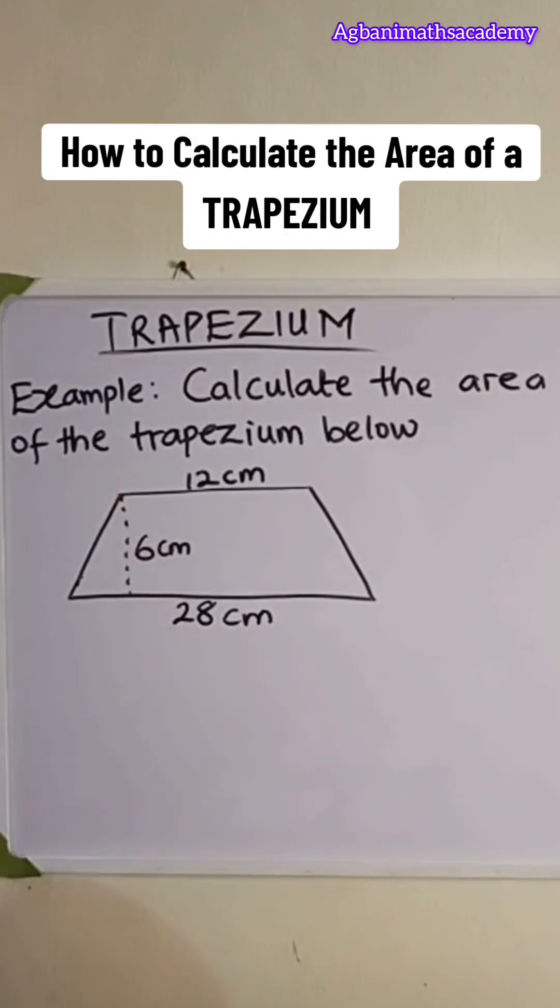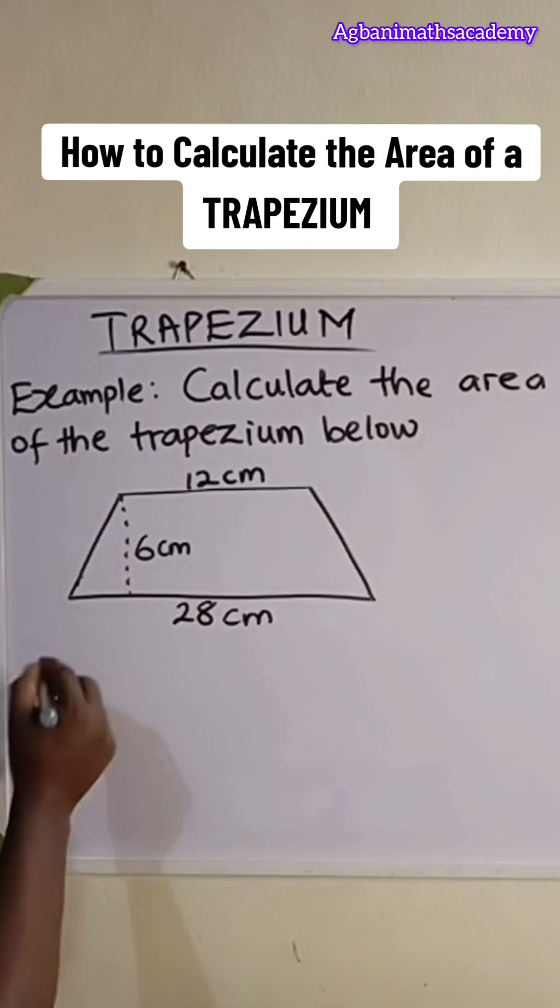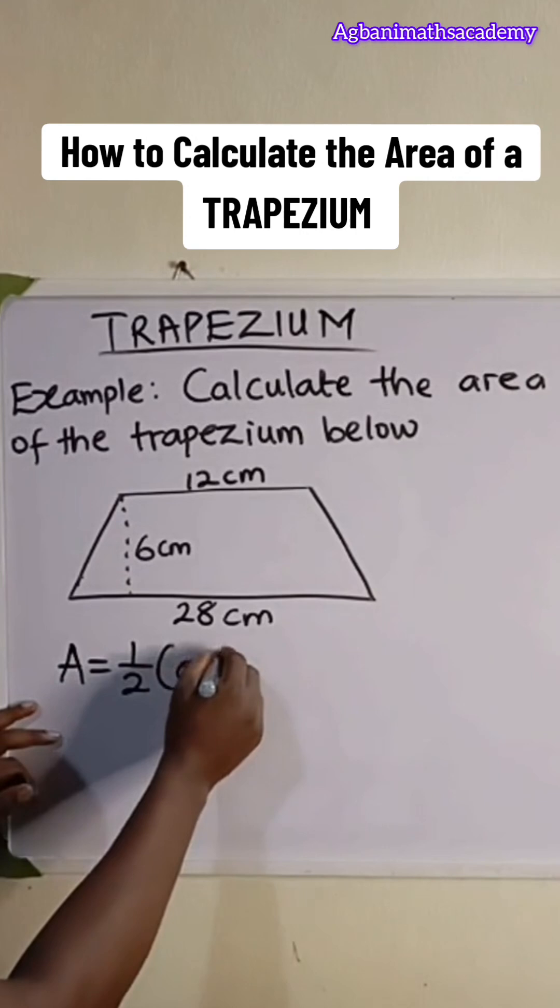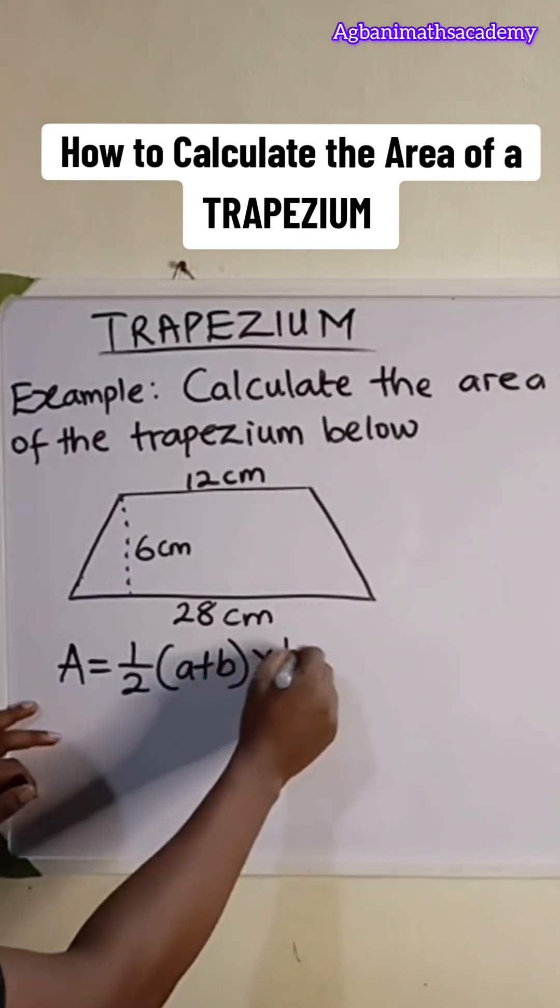So we're expected to calculate the area of this trapezium. Looking at this, we need to identify first, we need to write the formula. The formula is area is equal to half a plus b times the height.